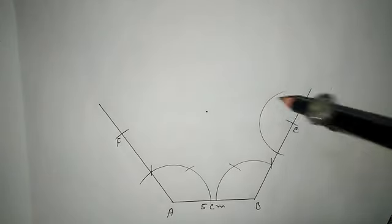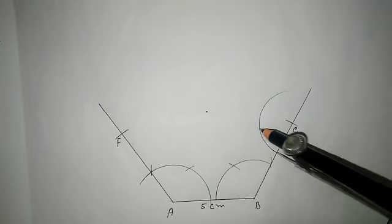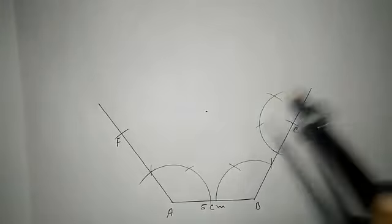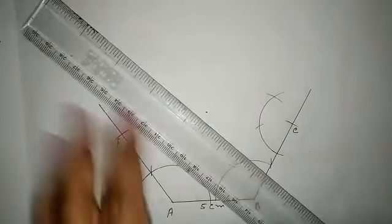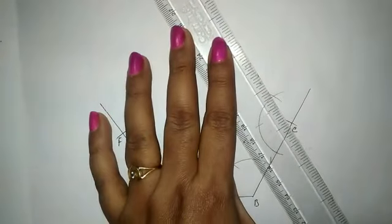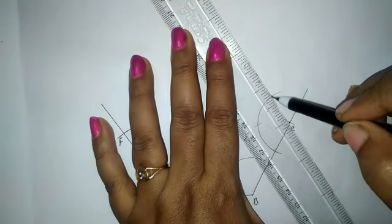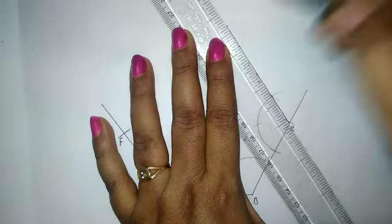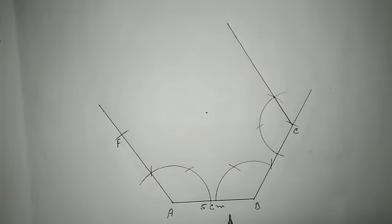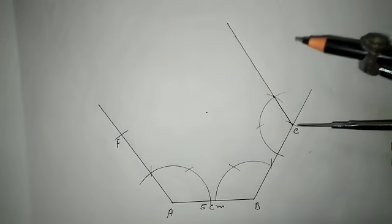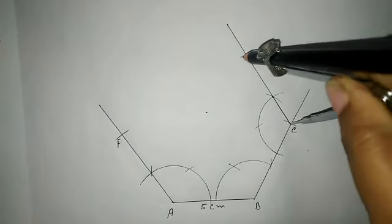Now I have to draw a 120-degree angle at C. Taking 5 centimeters in the compass, I cut a point from C.